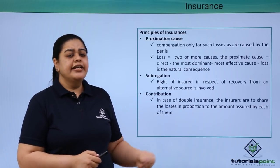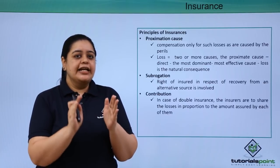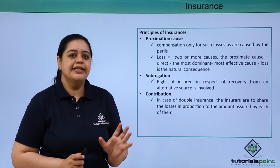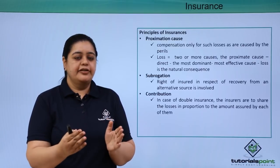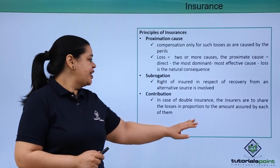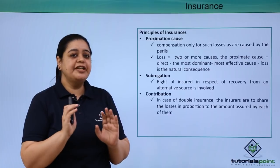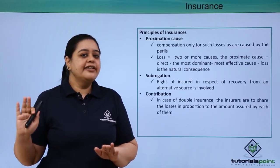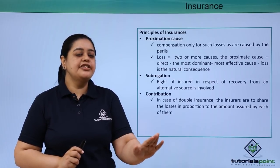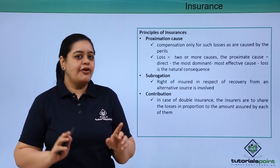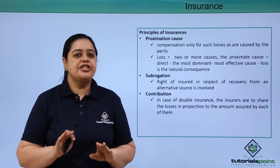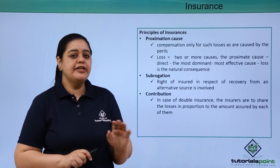The next principle is contribution. If there is a double insurance — which is common in health insurance — where a person takes insurance from two companies simultaneously for the same cause, in case of a loss, the insurance companies will share the losses in proportion to the amount assured by each of them. For example, if I have health insurance of five lakhs from XYZ company and one lakh from ABC company, when a loss occurs the companies share it in the ratio of their sum assured.